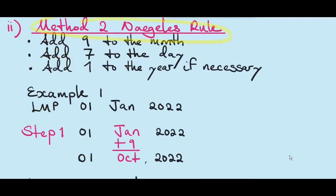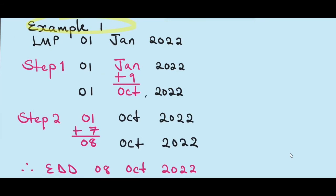The less common method of Naegele's rule is: add 9 to the month, add 7 to the day, and add 1 to the year only if necessary. Depending on which method you use — method 1 or method 2 — it will always give you the same EDD. Here's an example of method 2. Our LMP is 1st January 2022. Step 1: add 9 to the month, which gives us October. Step 2: add 7 to the day, which gives us 8th October. We haven't added 1 to the year because adding 9 months to January falls in the same year. So our EDD is 8th October 2022.